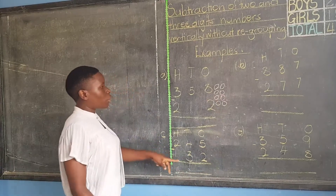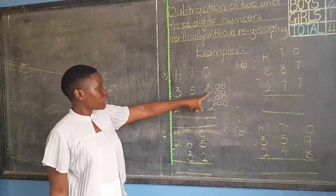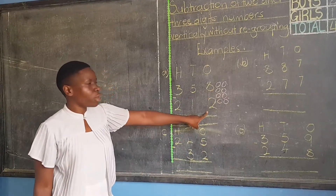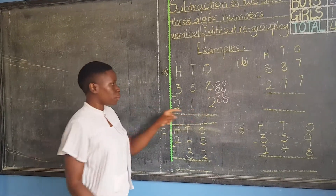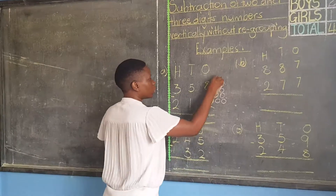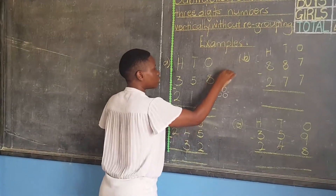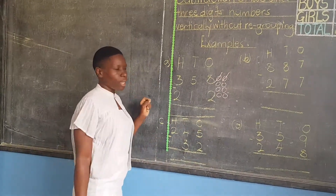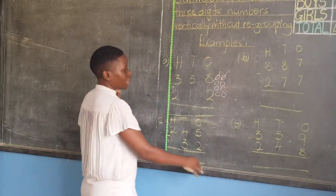On these eight balls which I have drawn, I am going to cancel only two. I count one, two. Then I count the remaining balls to get the answer.